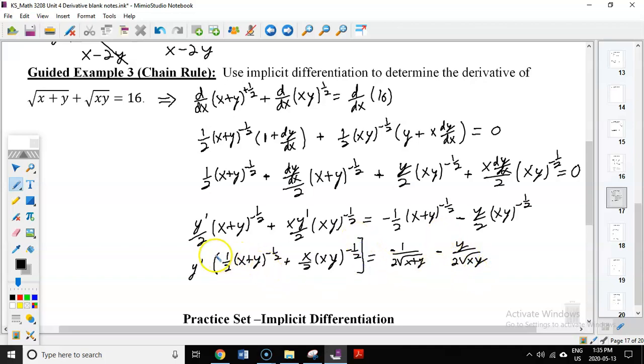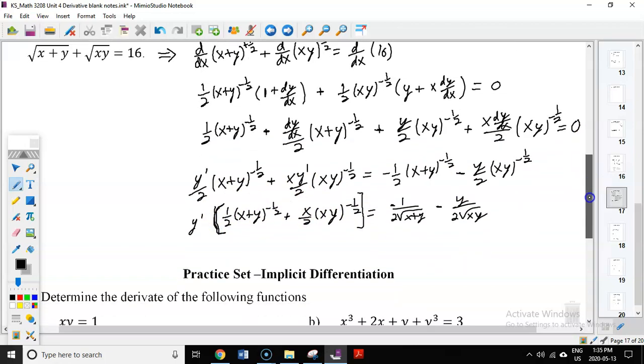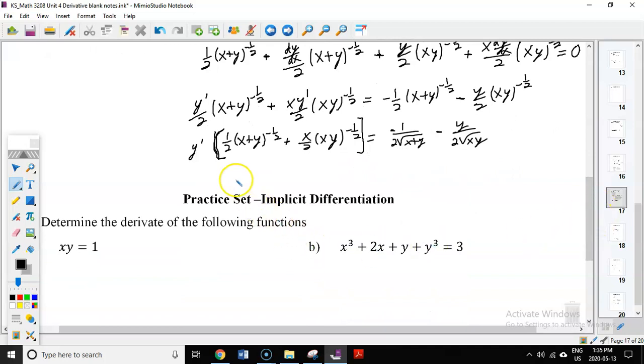and the last part of this we want to make a square bracket there instead would be to divide both sides by this square bracket. So to do that you get y prime equals negative 1 over 2 root x plus y minus y over 2 root xy and then that's all over these two which are essentially these two here with opposite signs. So we get 1 over 2 root x plus y plus x over 2 root xy.